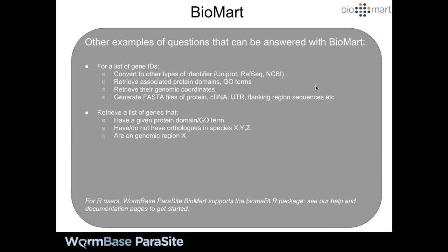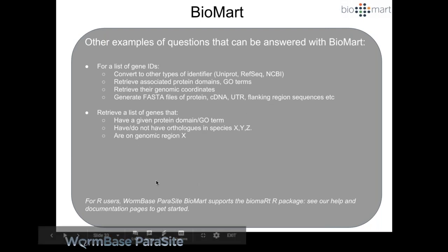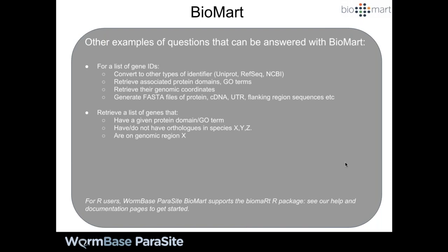That's just a taster of what BioMart can do. Other queries you might use BioMart for: converting a list of gene IDs to their identifiers, retrieving protein domains, GO terms, coordinates, or generating FASTA files. Equally, you can retrieve lists of genes with a given protein domain, GO term, orthology to a species, or location in a genomic region. If you're an R user, there is a BioMart R package that WormBase Parasite BioMart supports, with tips for getting started on our help pages.